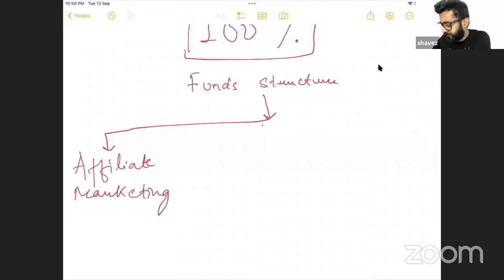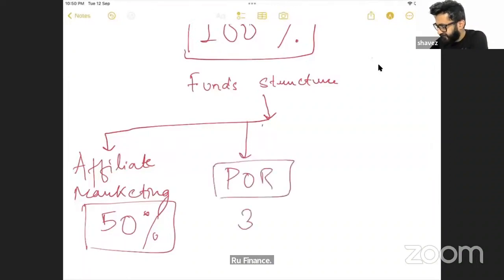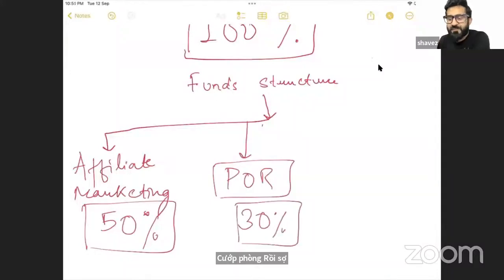Affiliate marketing, 50 percent. Reality check, true figures. Proof of reserve, 30 percent. Management fee.